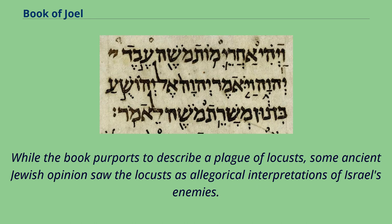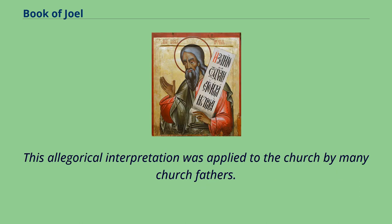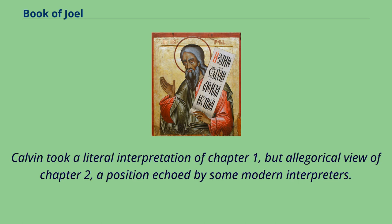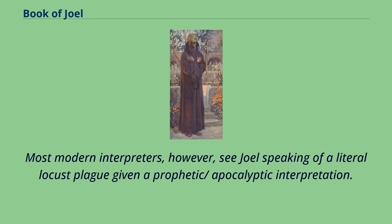While the book purports to describe a plague of locusts, some ancient Jewish opinions saw the locusts as allegorical interpretations of Israel's enemies. This allegorical interpretation was applied to the church by many church fathers. Calvin took a literal interpretation of chapter 1 but an allegorical view of chapter 2, a position echoed by some modern interpreters. Most modern interpreters, however, see Joel speaking of a literal locust plague given a prophetic/apocalyptic interpretation.